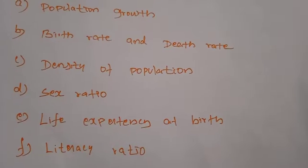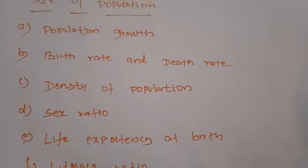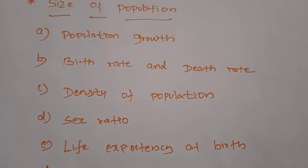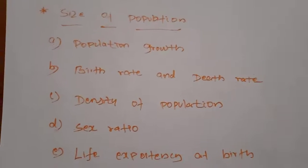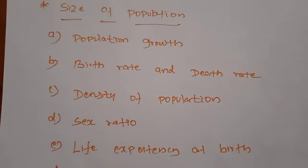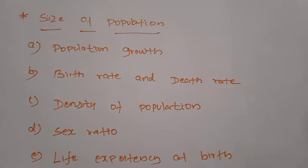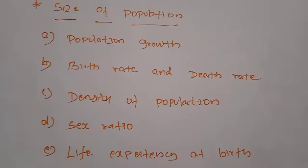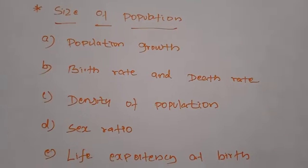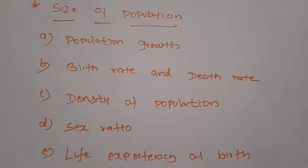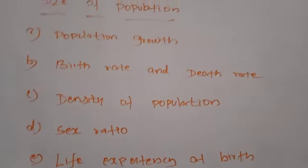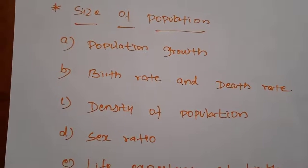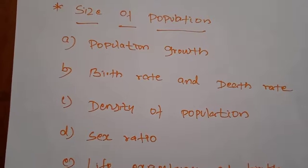Next, birth rate and death rate. The birth rate refers to the number of births per thousand of population. The death rate refers to the number of deaths per thousand of population. The birth rate was 39.9 in 1951 and fell to 21.9 in 2011. Kerala has the lowest birth rate and Uttar Pradesh has the highest. West Bengal has the lowest death rate and Odisha has the highest death rate among the states. Bihar has the highest decadal growth rate of population, while Kerala has the lowest.